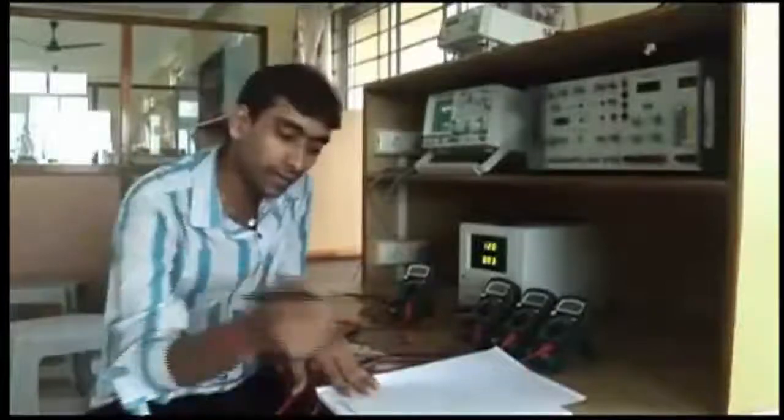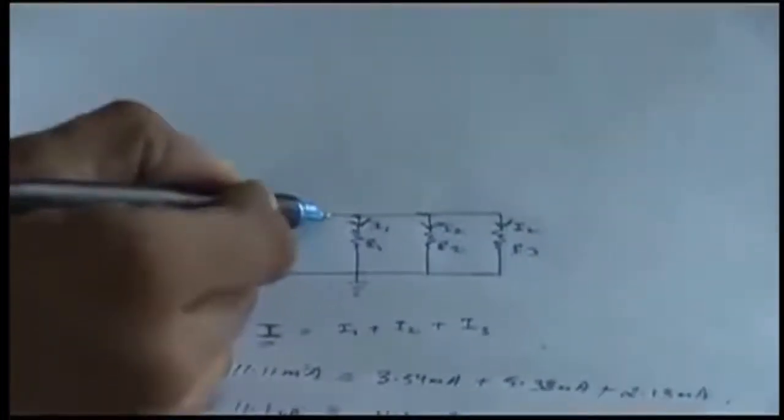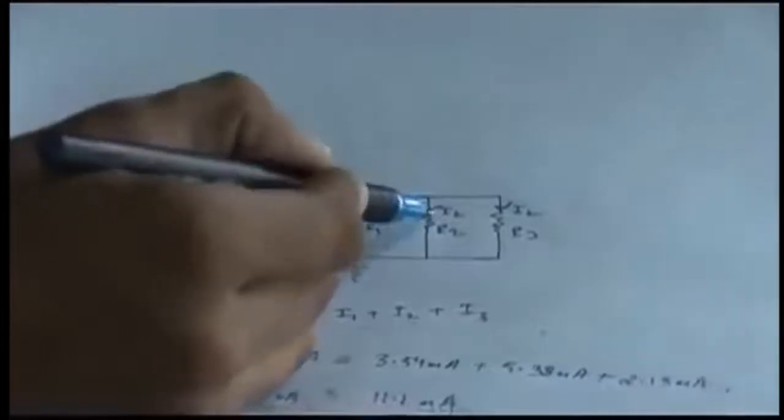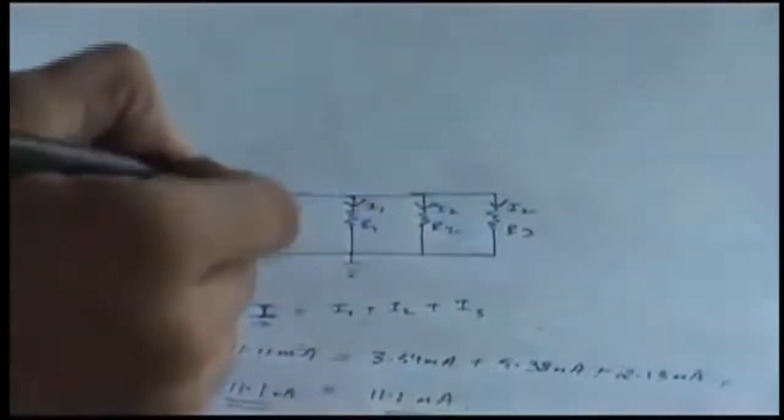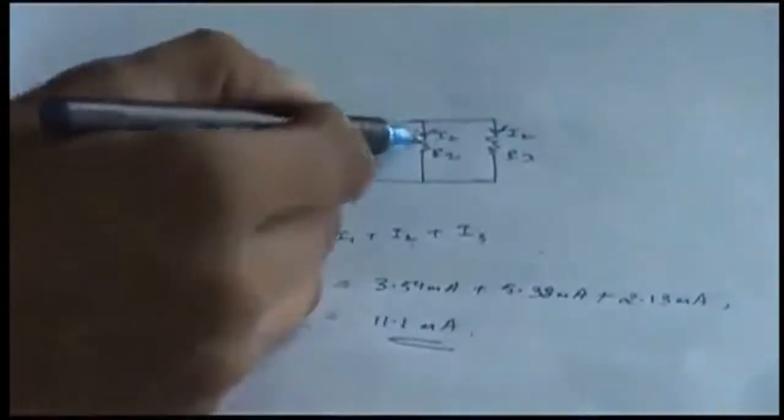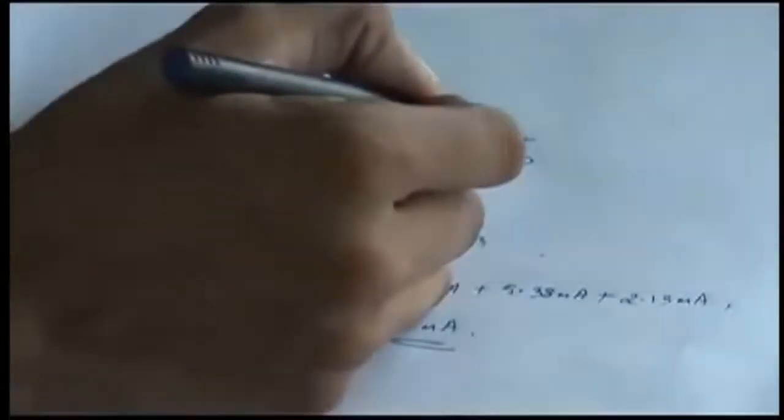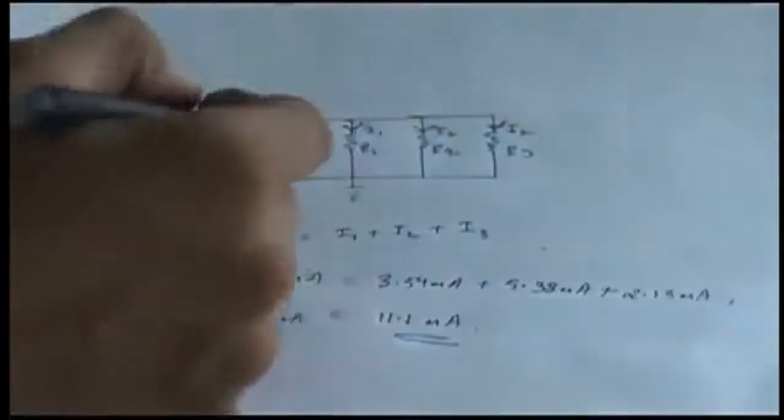You can see in the current division rule what is happening here in this circuit. This is total current coming, the current is divided here, here and here. So your total current has been divided into this, this and this. So what will be your I1, I2, I3? So this I is equal to I1 plus I2 plus I3.